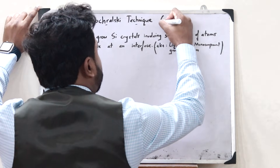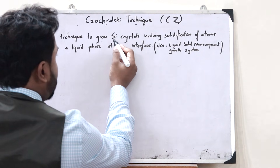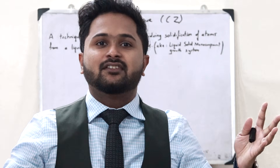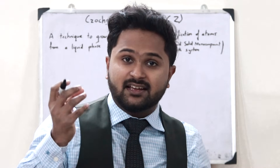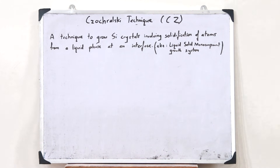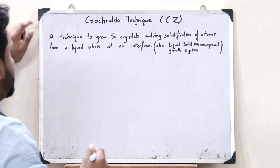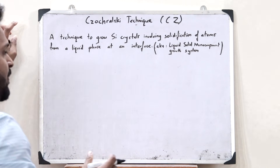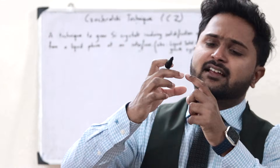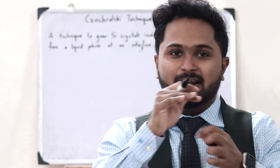The Czochralski technique, or the CZ technique, is basically a technique used for the purpose of growing silicon crystals. It is with the help of these silicon crystals that we create silicon wafers. So, in order to grow these silicon crystals, we use the Czochralski or the CZ technique. This CZ technique involves the solidification of atoms from a particular liquid phase, and this solidification happens at a particular interface — meaning the silicon crystals are obtained by the process of solidification of a liquid at a particular interface.